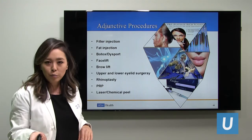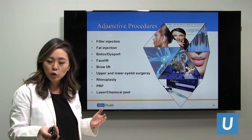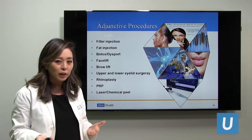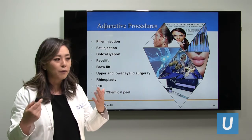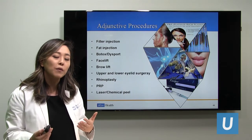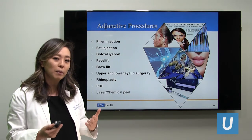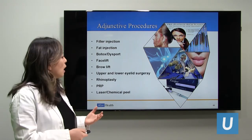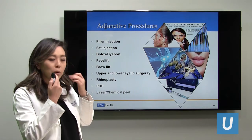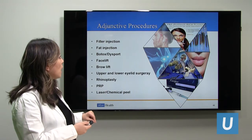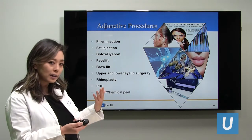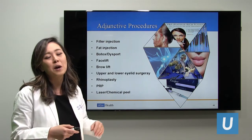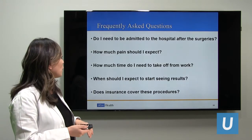Our facial plastic and reconstructive surgery division at UCLA is well equipped to provide adjunctive procedures. After training in otolaryngology head and neck surgery with a subspecialty year in cosmetic and reconstructive surgery of the face, we offer: fillers for lips and nasolabial folds, fat grafting, facelifts, upper and lower eyelid blepharoplasties, PRP for face and hair, and rhinoplasties.